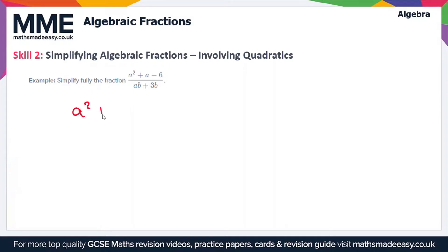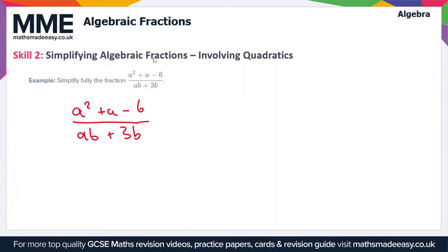We're going to simplify (a squared plus a minus 6) over (ab plus 3b). When you have quadratics you're normally aiming to factorize them. If you're not confident on factorizing, we have separate videos on factorizing into single brackets and double brackets. We're aiming to factorize both the numerator and the denominator, and hopefully one of the brackets will cancel so we can simplify the fraction.